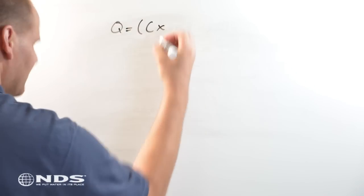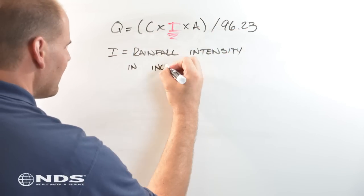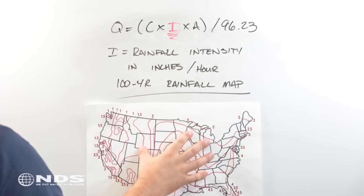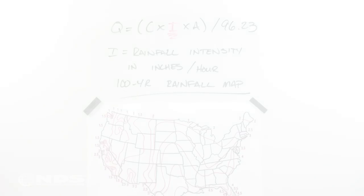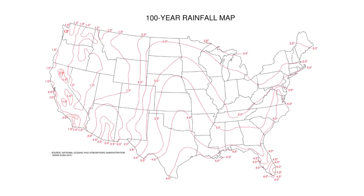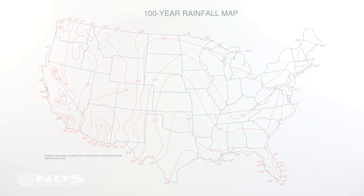I is the rainfall intensity in inches per hour. I can be calculated in several ways, but in this video I will use the approximate rainfall values from this 100-year rainfall map. The 100-year rainfall map shows the approximate amount of rain that will fall in the 100-year storm event.